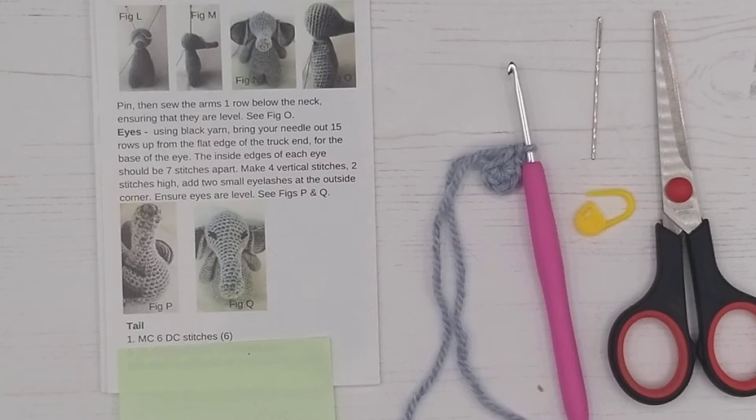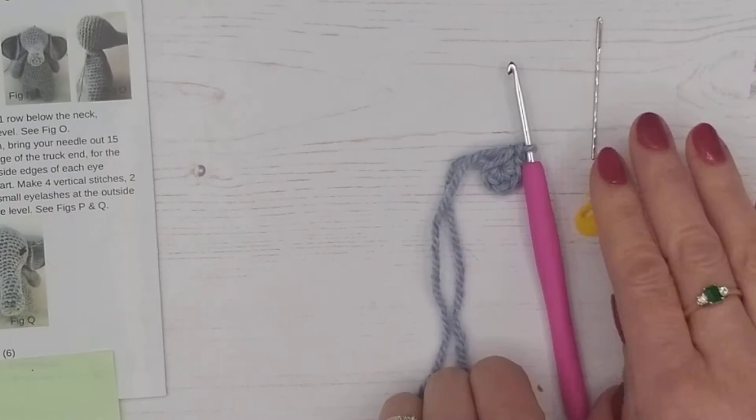So we'll start with the tail. You're going to need your crochet hook, wool, stitch marker, needle and a pair of scissors. So let's get started.